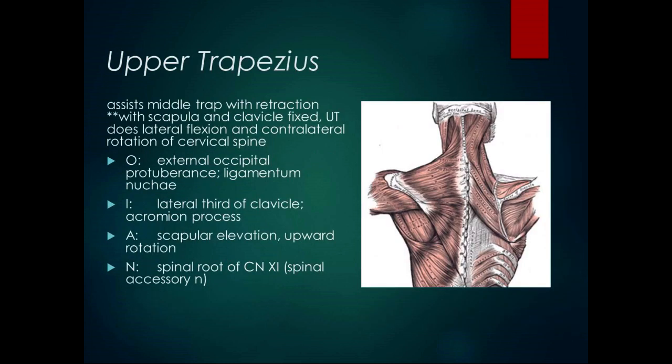The upper trapezius's primary action is scapular elevation, and it uses scapular elevation in a force couple for upward rotation — we'll talk about how that works in a few minutes. Its origin is the external occipital protuberance on the back of the cranium and the ligamentum nuchae, which is the ligament on the posterior side of the cervical spine. So it has a superior origin.